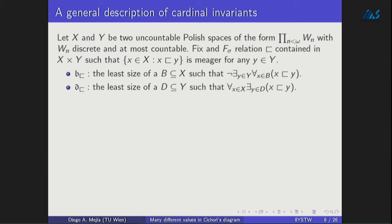We consider the cardinals related to this relation. B(⊏) will be the least size of a family of objects in X that cannot be bounded by a single object from Y. And dually, D(⊏) is the version of the dominating number, which says that any element from X can be dominated by some member of the dominating family from Y. Because we have the requirement that the set of objects dominated by a single y is meager, this gives two inequalities: every non-meager set cannot be bounded, and dually, any dominating family will cover all the reals.